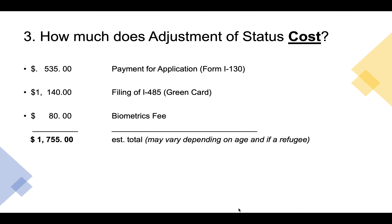How much does it cost to do the adjustment of status? You'll first have to pay fees associated with your initial petition. For an adjustment of status application, you'll typically pay $535 to file your I-130 petition. If you're filing a different petition, check the filing instructions to make sure you pay the correct fee. Once your petition is approved, you'll pay a separate fee to file your I-485 green card application. For most applicants, the fee is $1,140 plus an $85 biometrics fee.